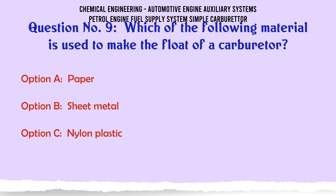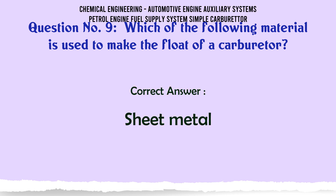Which of the following materials is used to make the float of a carburetor? A. Paper. B. Sheet metal. C. Nylon plastic. D. Cast iron. The correct answer is sheet metal.